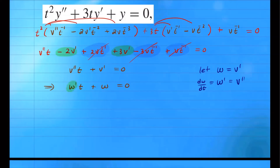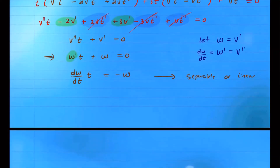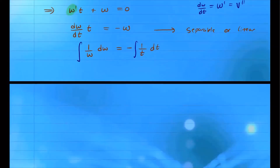We can treat this as separable or linear. Using separation of variables: rewrite as dw/dt times t equals negative w. Dividing by w on both sides and multiplying by dt gives 1 over w dw equals negative 1 over t dt. Integrating both sides, and since t is positive as given, we get ln of w equals negative ln of t plus some constant c.